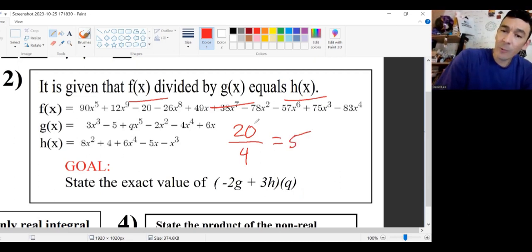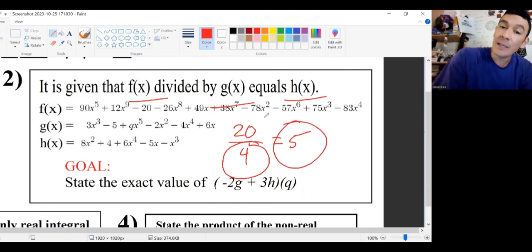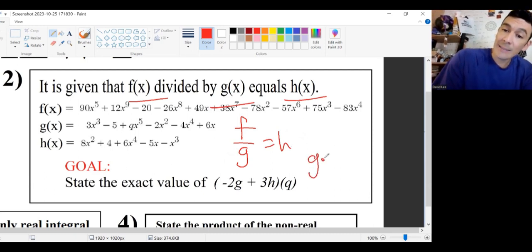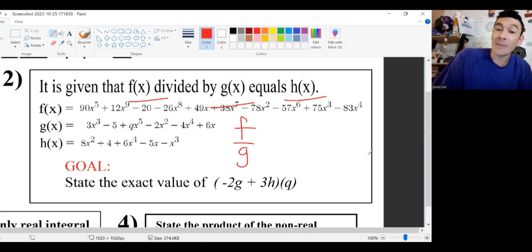You know that this number divided by this number equals this number. But from here, what I want you to see is that when you have this over this equals that, that means that this times this equals that there. So when they say that f divided by g equals h, that means that g times h is equal to f. That's exactly what that means.